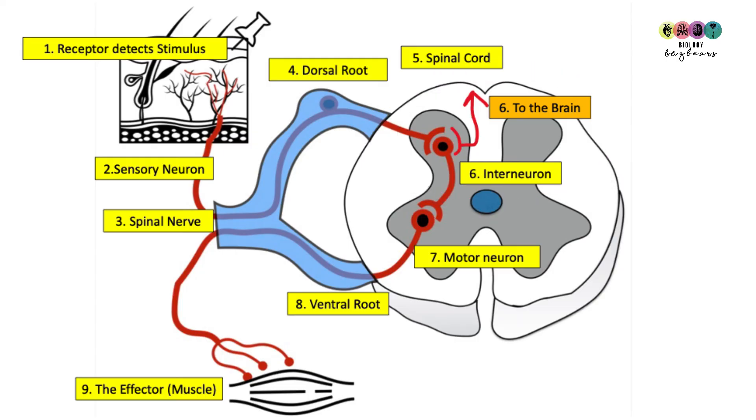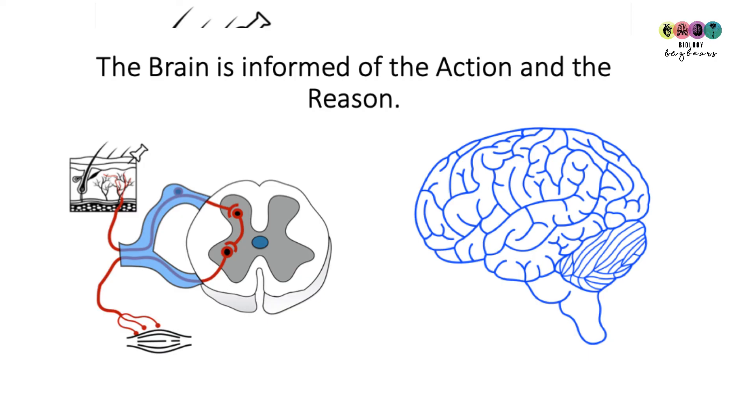The impulse travels via a motor neuron out of the spinal cord through the ventral root down to an effector which is usually some type of muscle and it causes it to contract getting the hand or the finger out of danger. As the hand or the finger moves away the impulse reaches the brain and it becomes aware as to the pain and what happened.